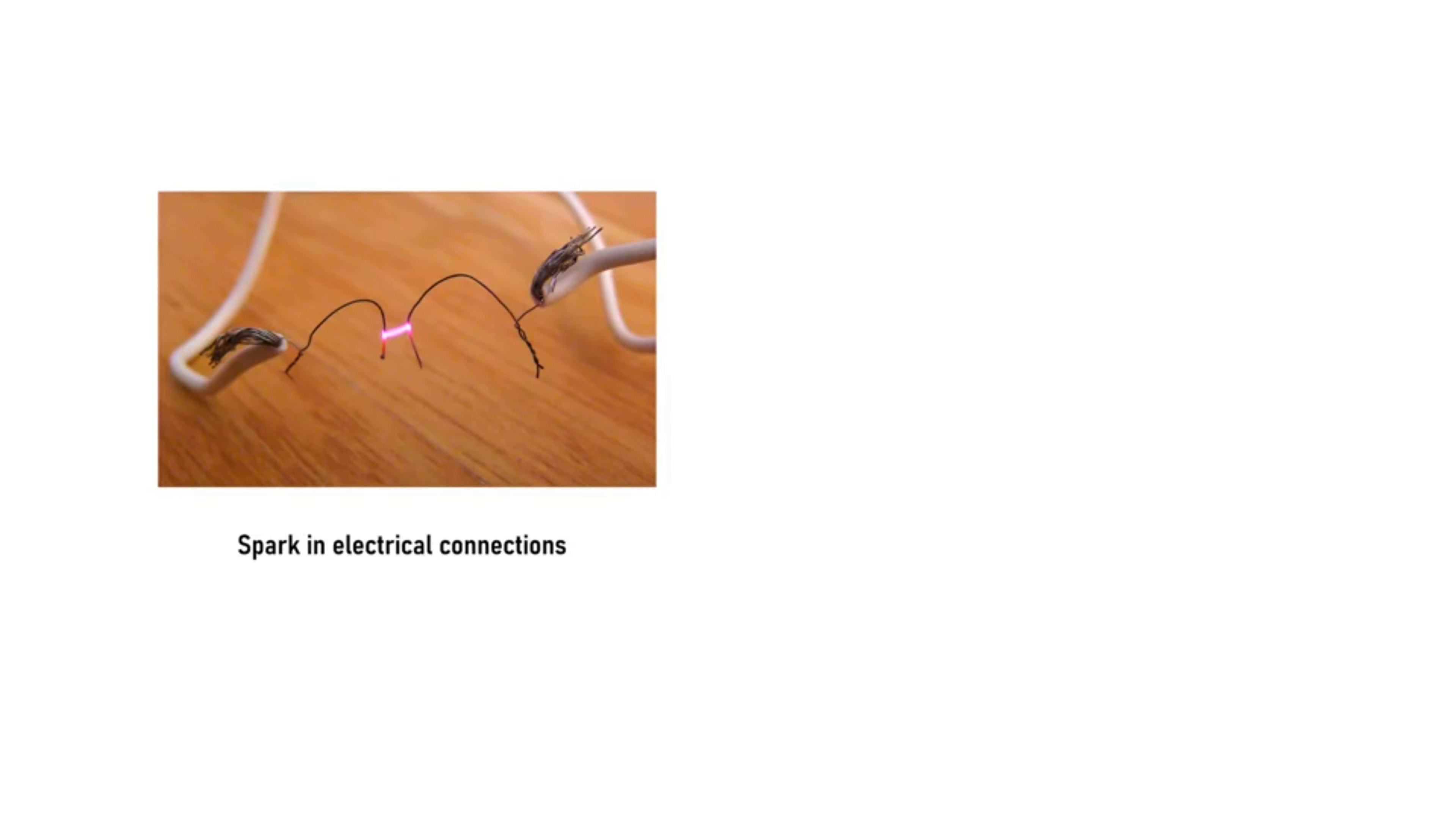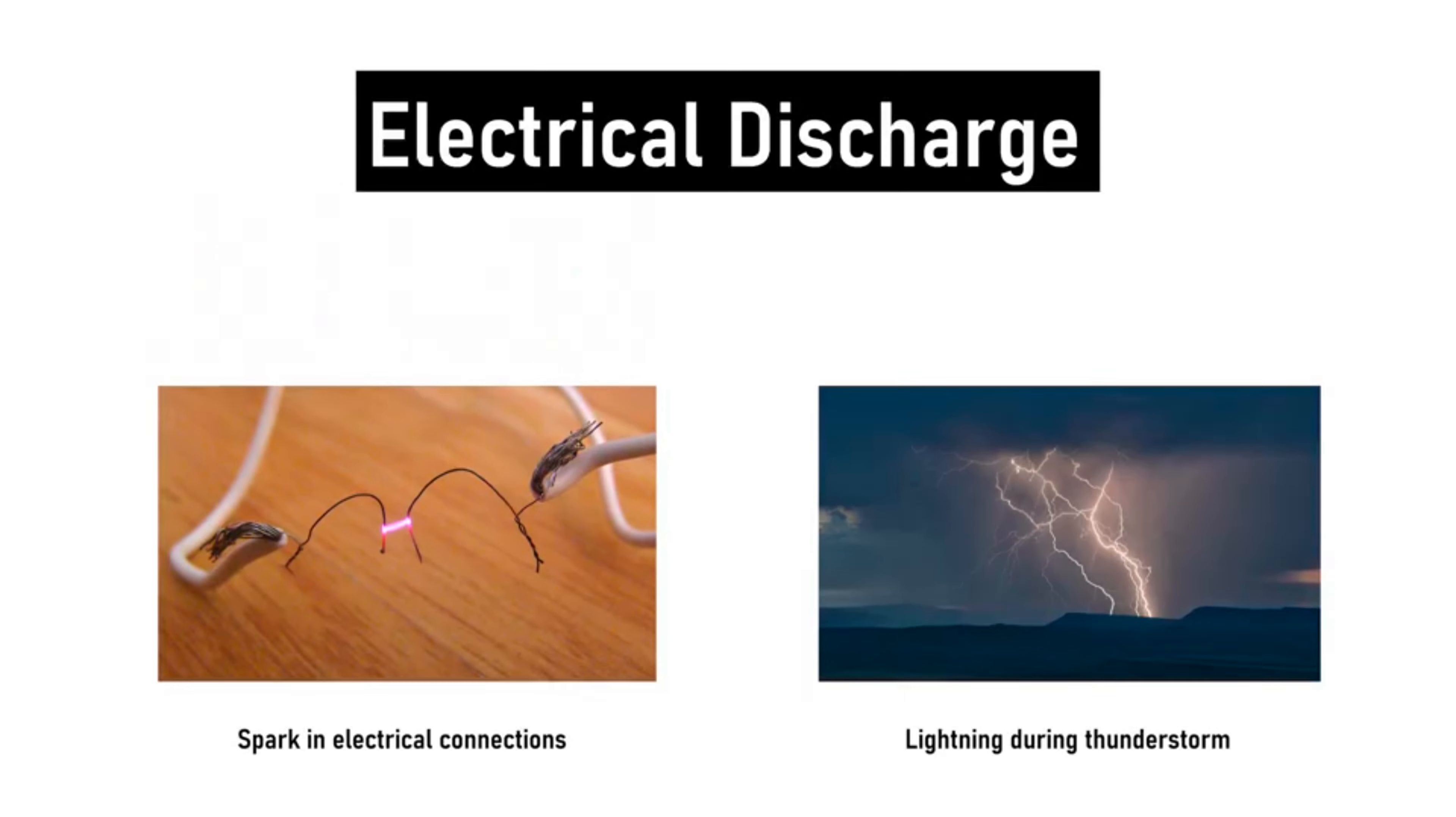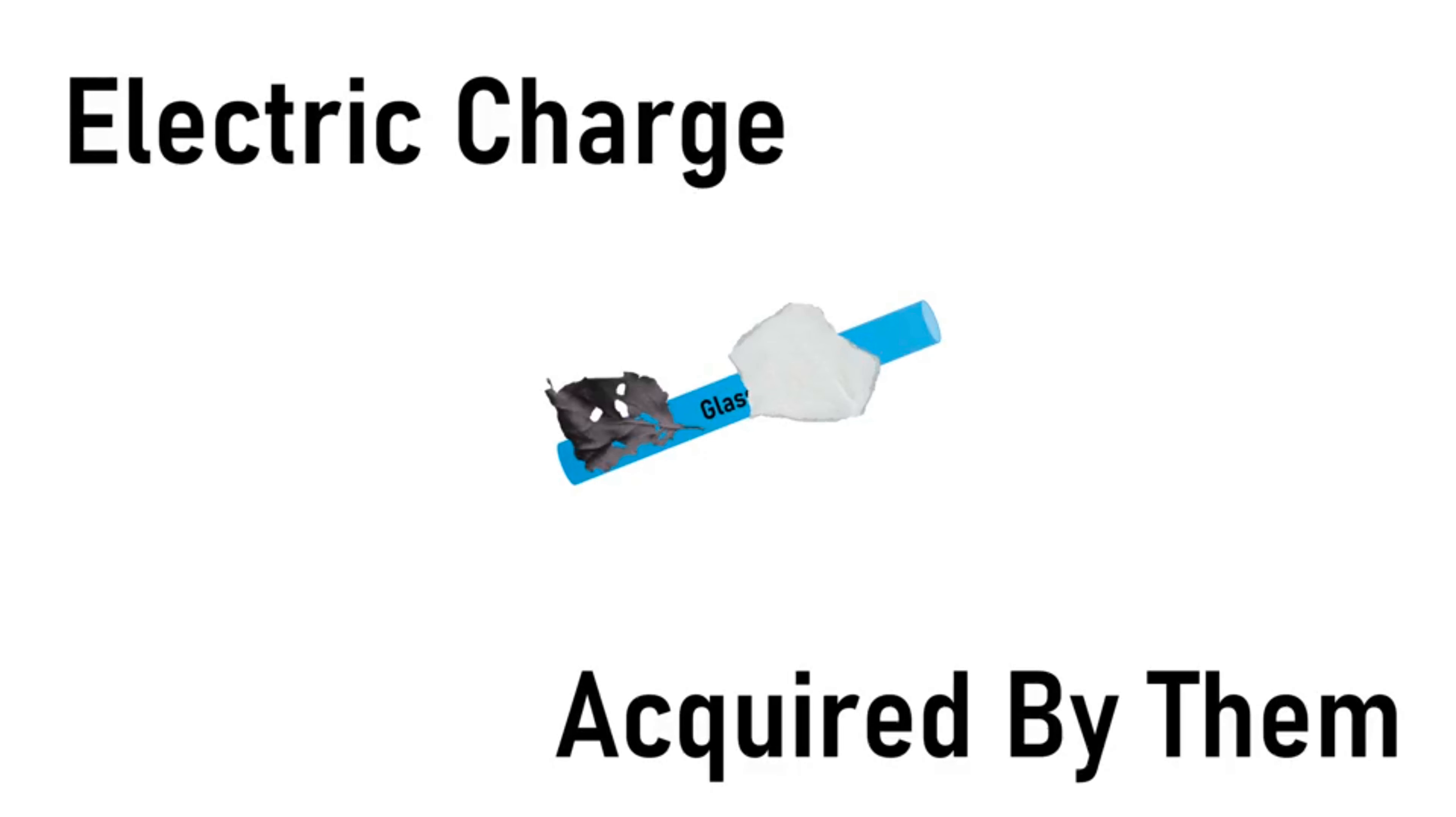Sparks in electrical connections and lightning during thunderstorms are both due to electrical discharge. When a glass rod is rubbed with a piece of silk cloth, it will attract objects like dried leaves and papers. This is because of the electrical charge acquired by it.